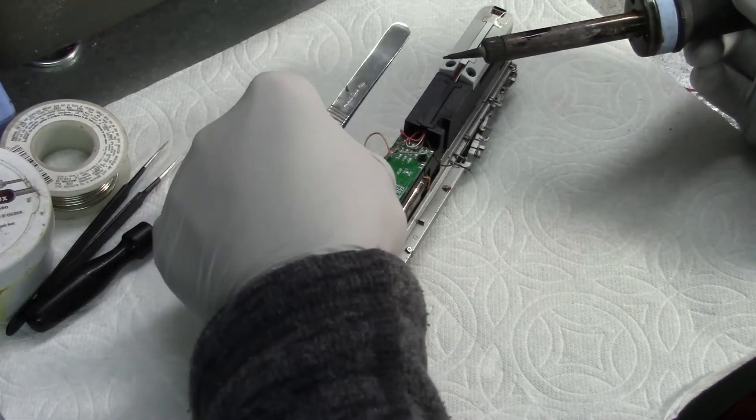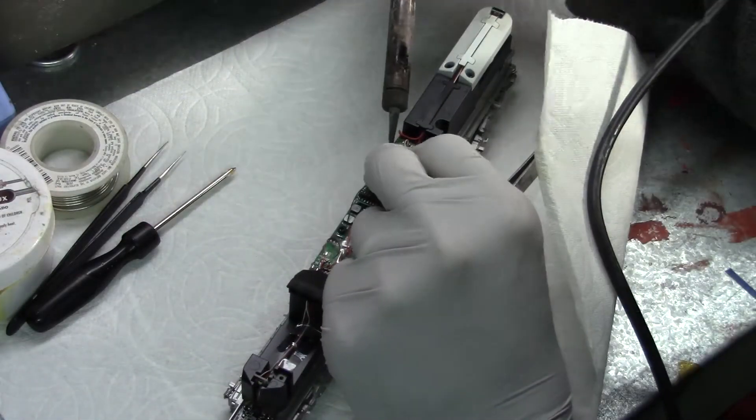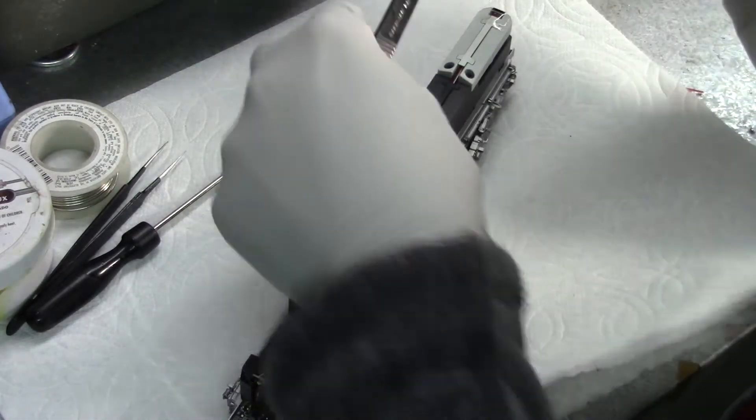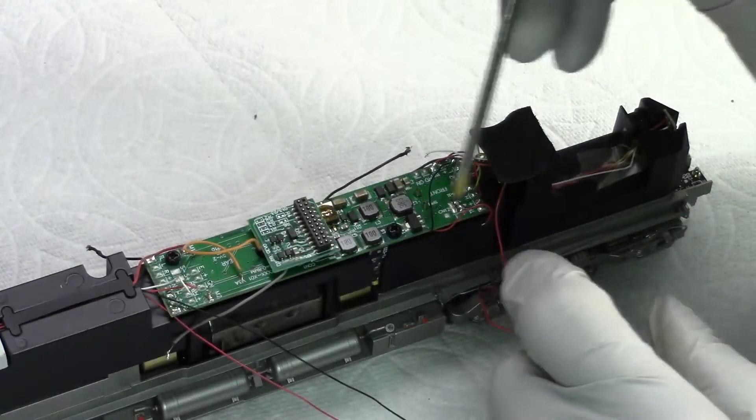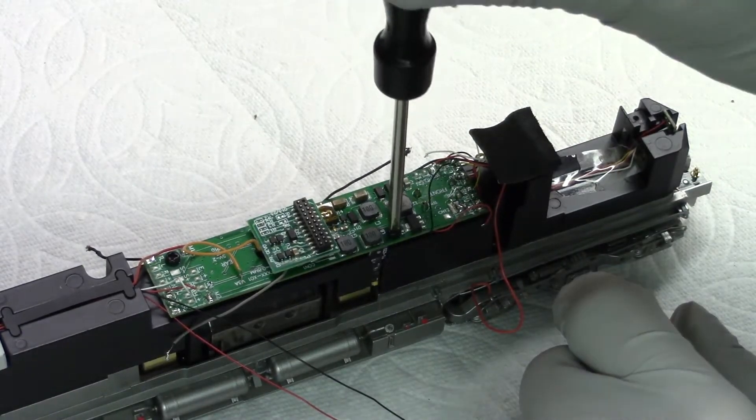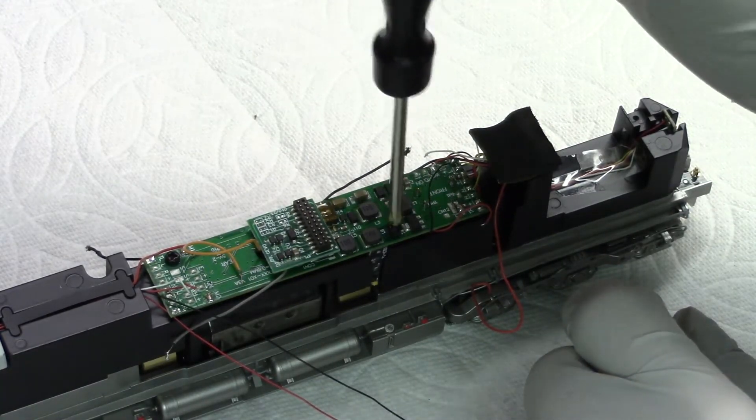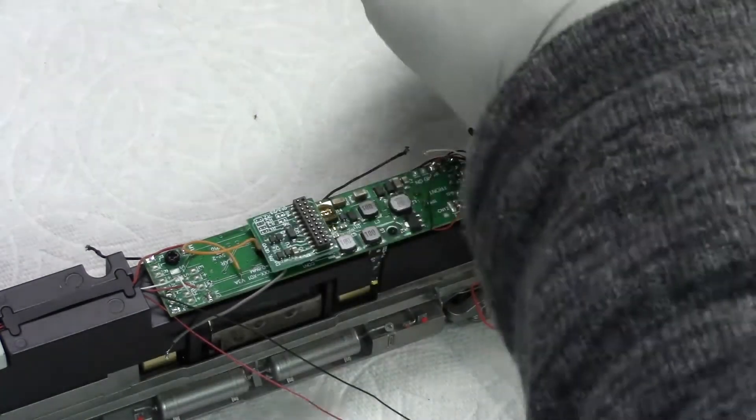Using a soldering iron I unsoldered all the wires from the factory board. After the wires were clear I then unscrewed the two screws that hold the factory board to the chassis.